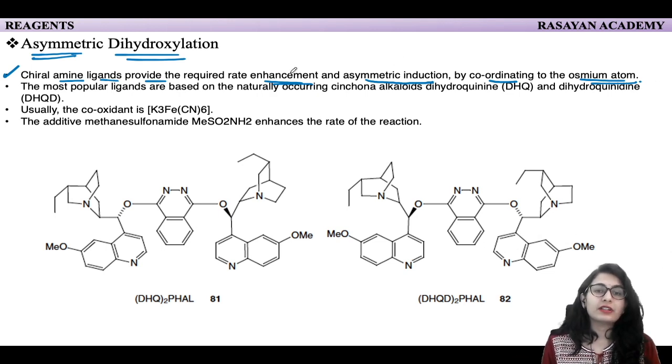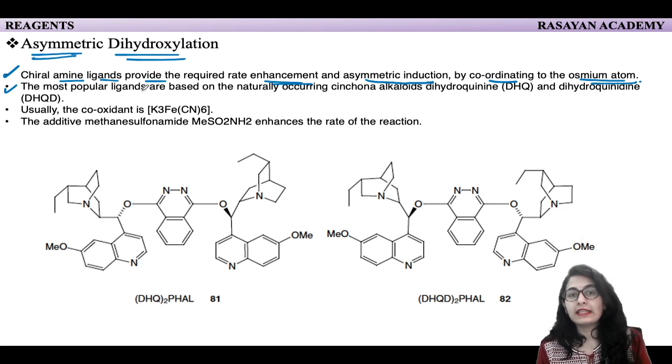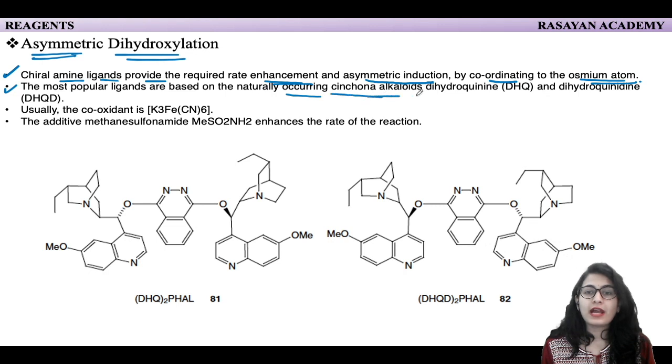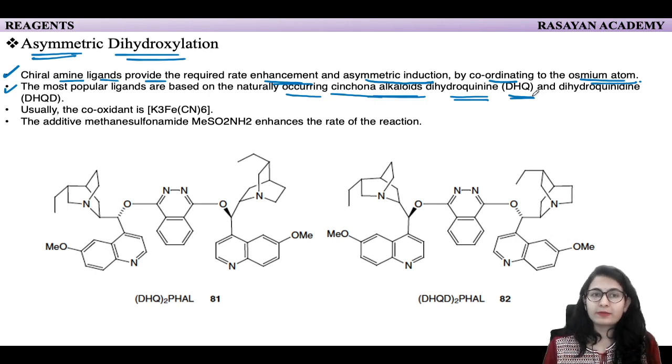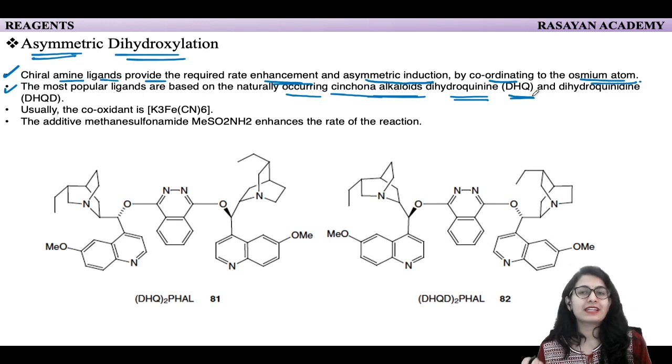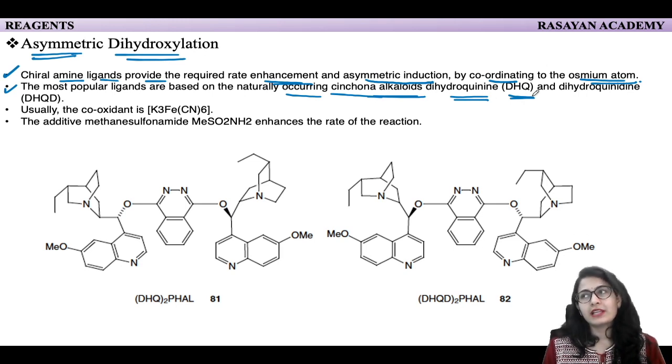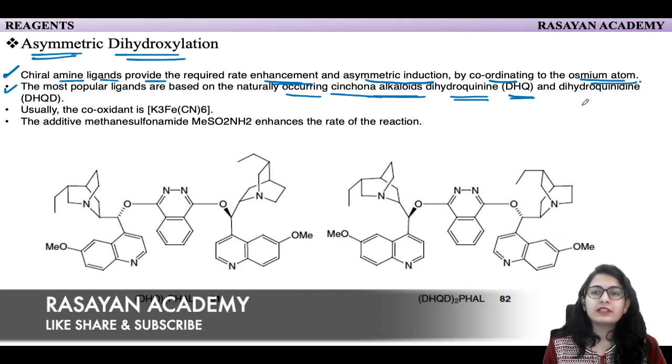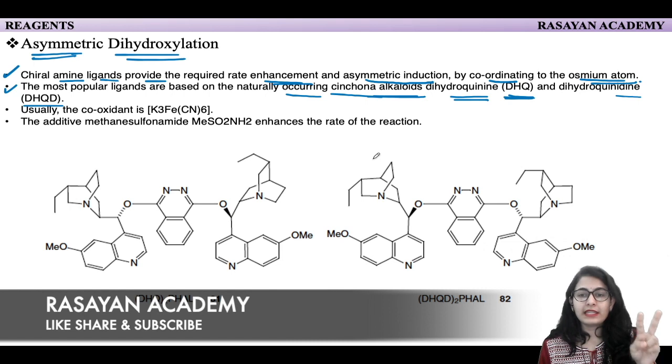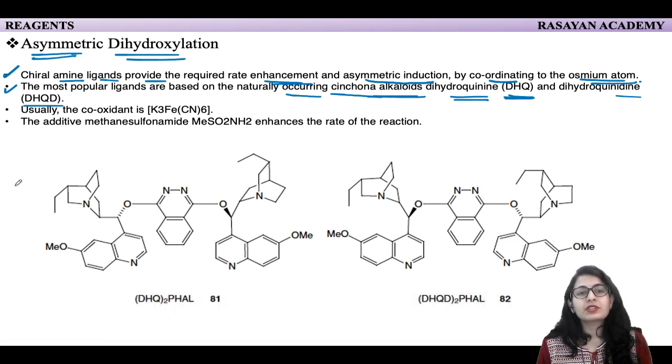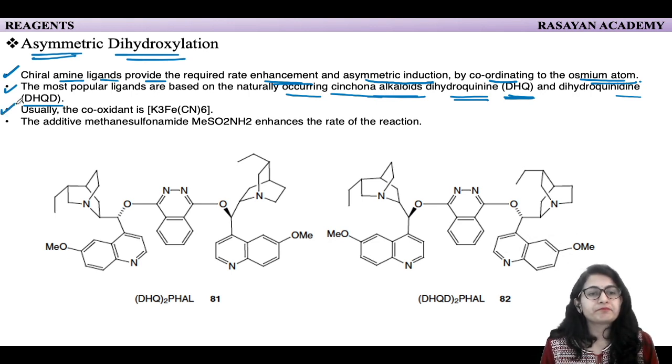The most popular ligands are based on naturally occurring cinchona alkaloids: dihydroquinine (DHQ) and dihydroquinidine (DHQD). Whenever we want to carry out asymmetric synthesis, we should take a molecule from nature's chiral pool. Nature has a lot of chiral molecules, so if we can extract any molecule from nature itself, it's going to be cheap, recyclable, and produce less harmful byproducts.